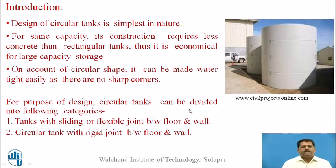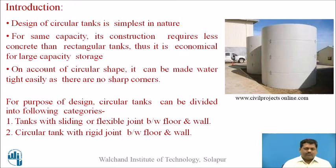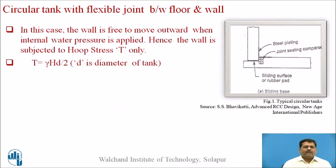For purposes of design, circular water tanks can be divided into two categories: first, tanks with a sliding or flexible joint between floor and wall; second, circular tanks with a rigid joint between floor and wall. This categorization is made because the joint between the base slab and the vertical wall is a critical point from both design and construction perspectives.